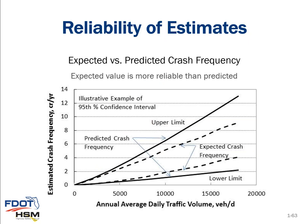Bringing this together in a summary of the reliability of the two methods: a graph shows expected crash frequency on the y-axis and ADT on the x-axis. The solid lines represent the 95% confidence interval of crash prediction from simple SPF calculations. When you apply the empirical Bayes analysis for expected crash frequency, the dashed line shows a tighter cone — meaning much greater reliability. It will never be an exact science, but the expected value provides significantly higher reliability than the predicted value alone.